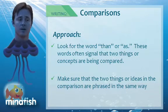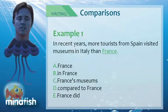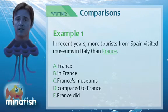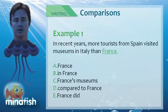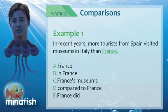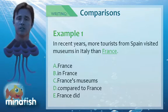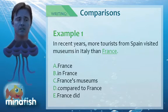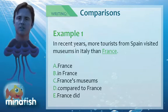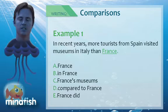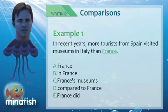So let's look at two examples. In recent years, more tourists from Spain visited museums in Italy than France. We've made a comparison between 'in Italy' directly to 'France.' So to make this a true comparison, we need to choose B here: 'visiting museums in Italy than in France.' You'll notice this is very similar to parallelism in that we're trying to make the prepositions consistent. There is a little bit of overlap, but generally things that are more consistent are more right on the SAT.